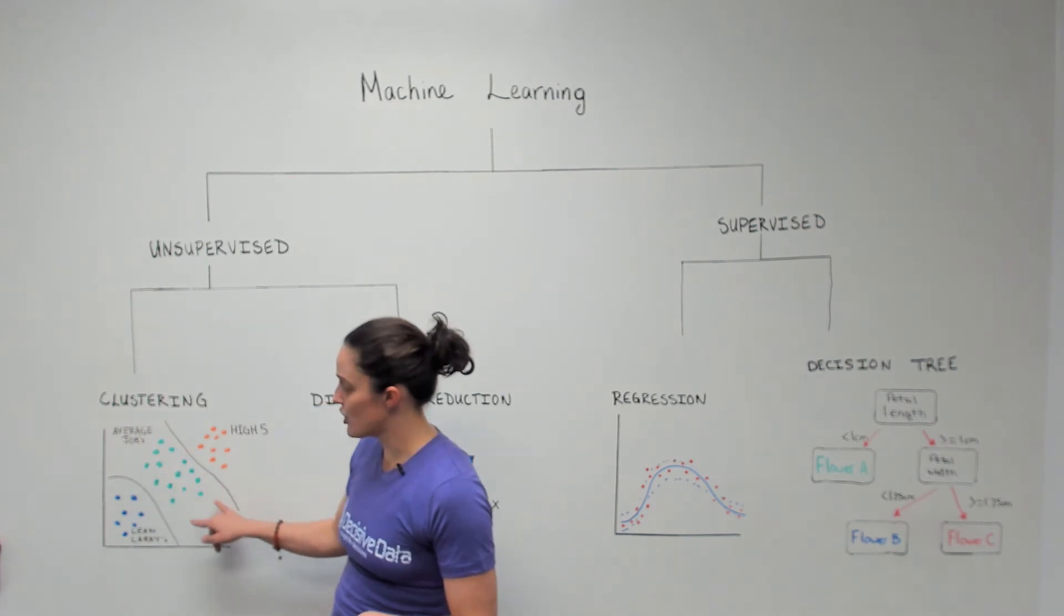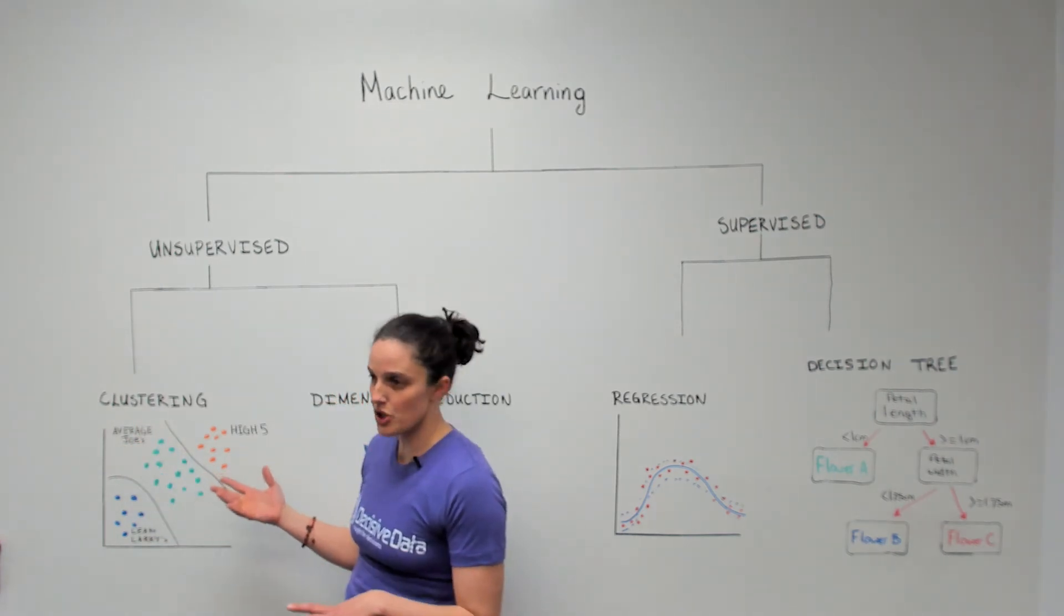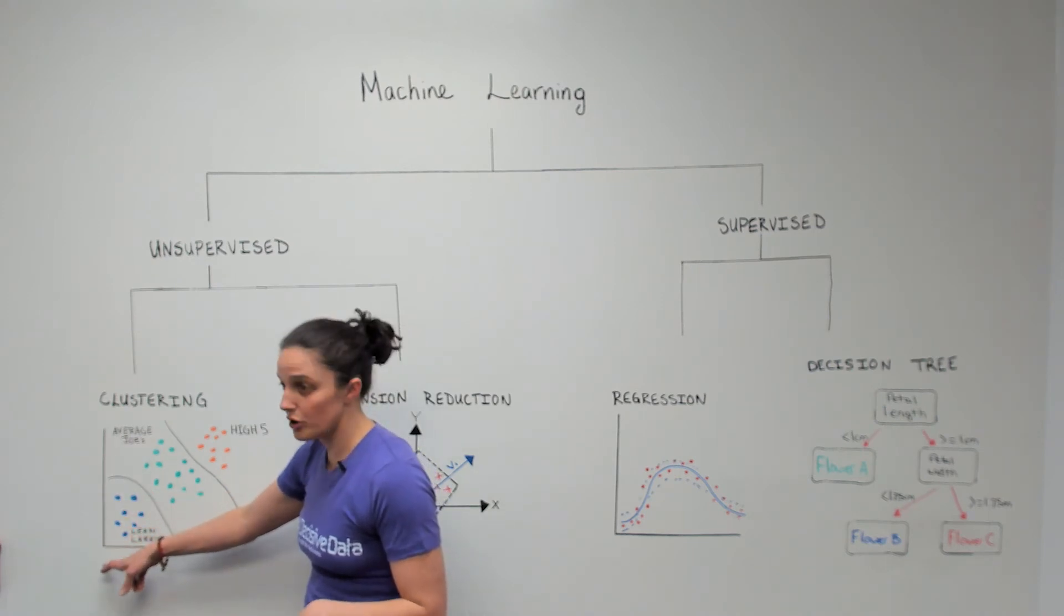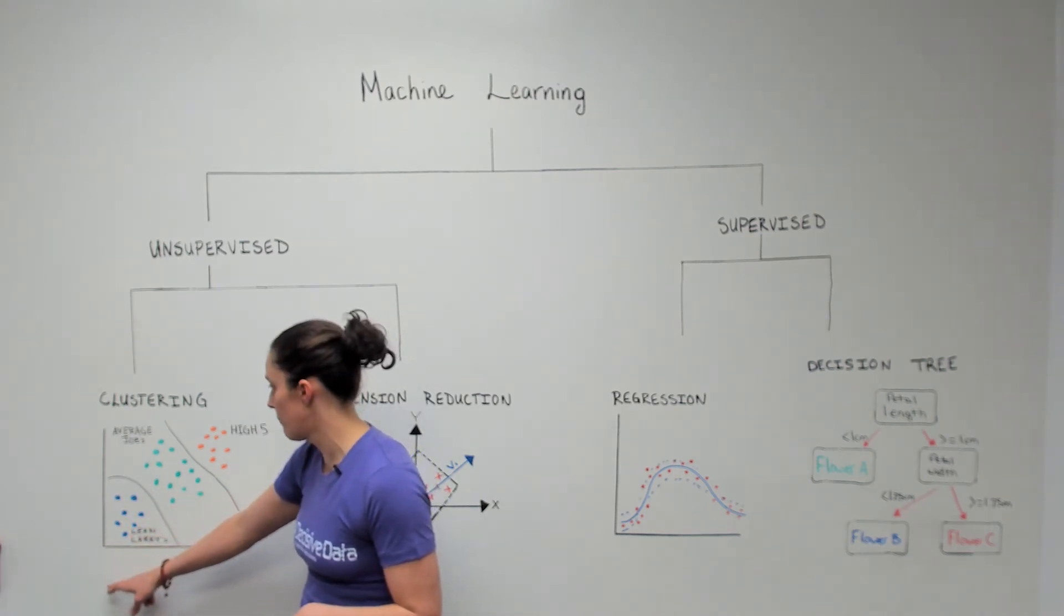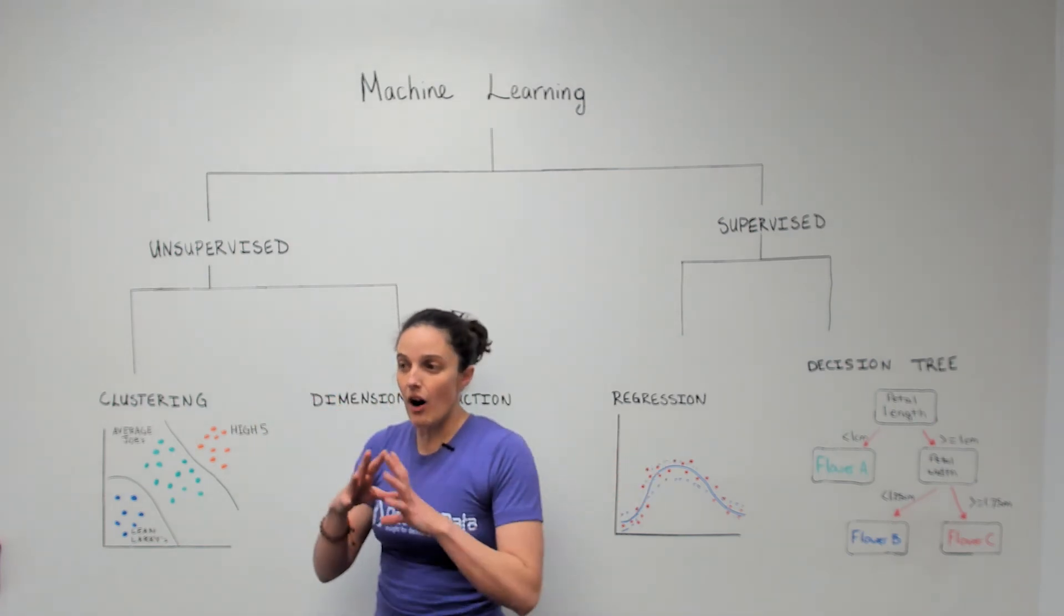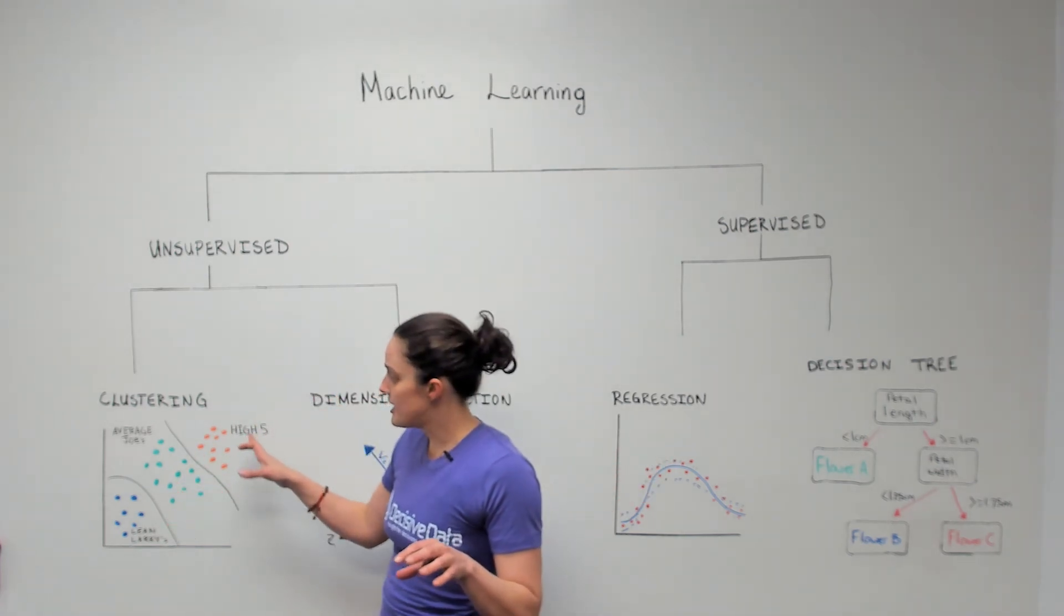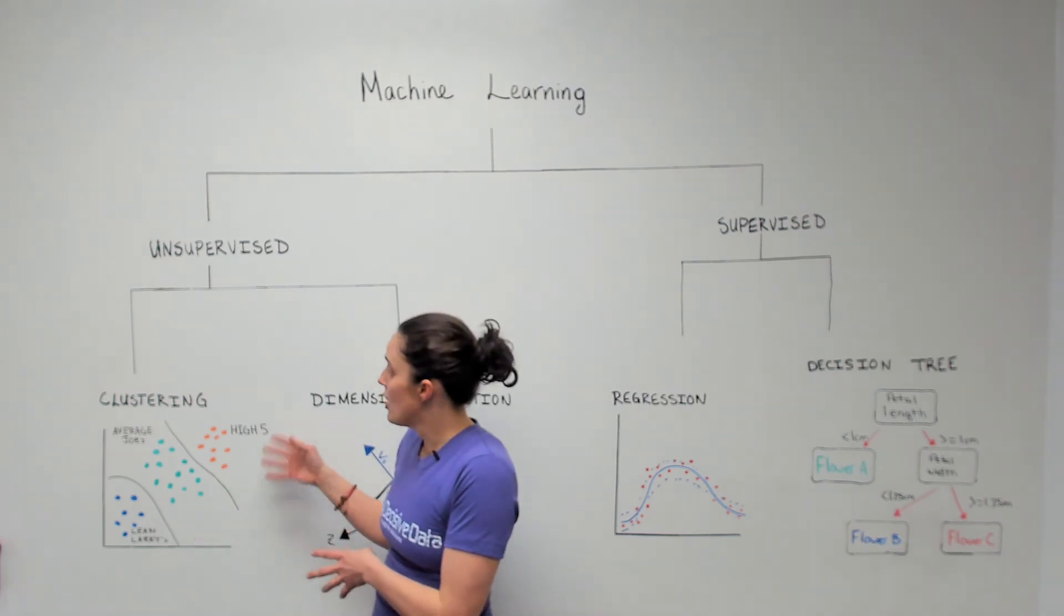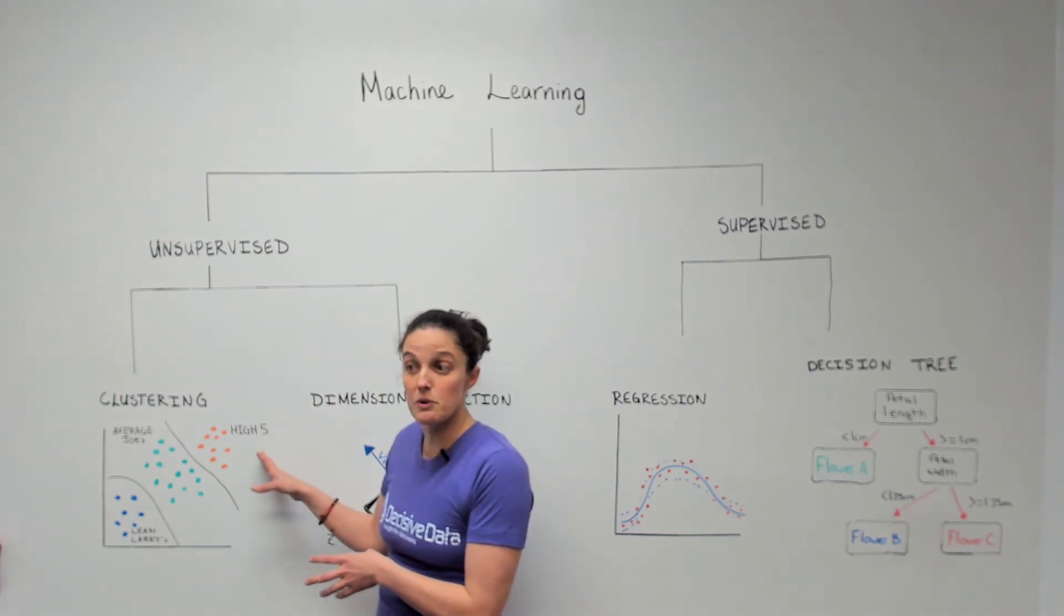In the middle here we have your average Joes. They kind of like a medium amount of sugar, medium amount of fiber. And then we have your lean Larry's where they want to keep their sugar content as low as possible. If this was a supervised example we would have all of this information and this data would already be labeled. But we don't have that. We had to make this up not knowing how these different groups would fall.